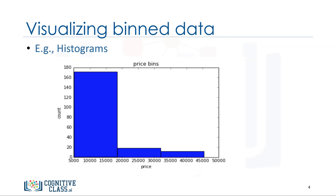You can then use histograms to visualize the distribution of the data after they've been divided into bins. This is the histogram that we plotted based on the binning that we applied in the price feature. From the plot, it is clear that most cars have a low price, and only very few cars have a high price.